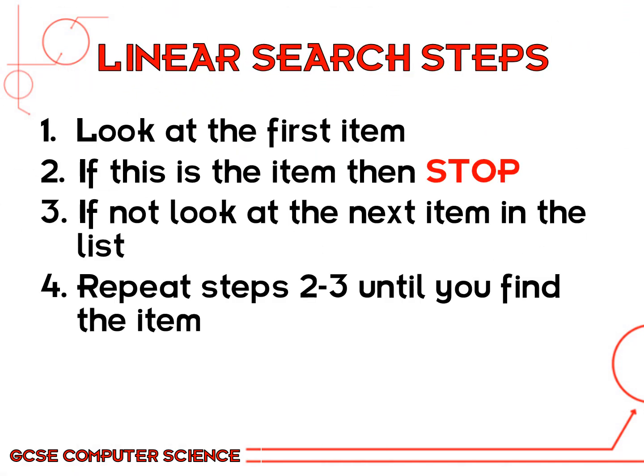The steps for the linear search are to look at the first item in the list. Sometimes this might be the item that you're looking for, so the algorithm will stop. If it's not what you're looking for, then it'll look at the next item along in the list and you'll repeat steps two and three. So if the next item along is what you're looking for, you stop; if it's not, then you move to the next one.